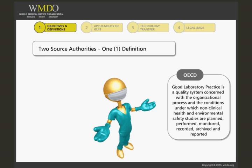According to OECD, good laboratory practice is a quality system concerned with the organizational process and the conditions under which non-clinical health and environmental safety studies are planned, performed, monitored, recorded, archived, and reported.